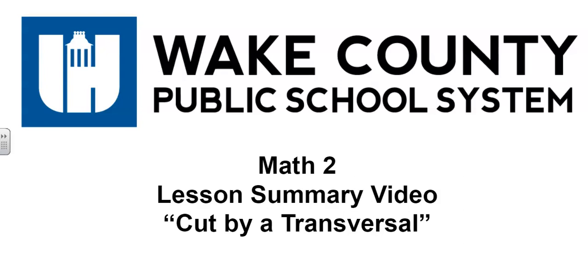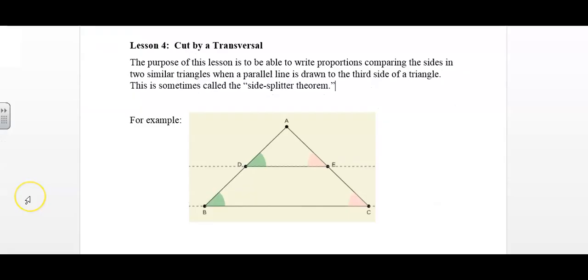This is the Math 2 Lesson Summary video for the lesson entitled Cut by a Transversal. In lesson 4 of Unit 7, Cut by a Transversal, the purpose of this lesson is to be able to write proportions comparing the sides in two similar triangles when a parallel line is drawn to the third side of a triangle.